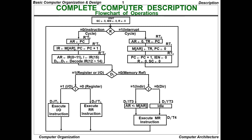Today we're going to discuss the complete computer description, that is the flowchart of operations in a single flowchart. In previous classes we discussed the instruction cycle, interrupt cycle, and different types of instructions: register reference instructions, I/O instructions, and memory reference instructions. Each one has its own flowchart. The complete computer description combines all of these into a single flowchart.